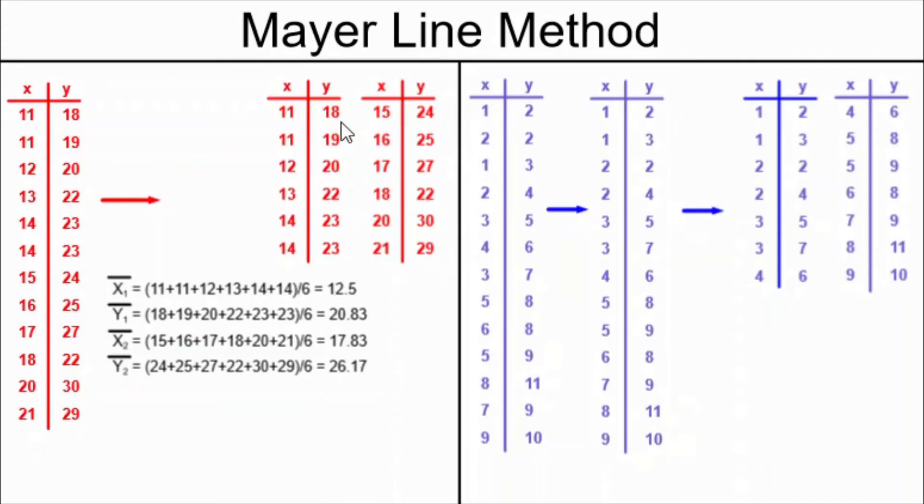Now that we have our tables arranged correctly, we're doing the same process in both the red and blue examples. And we found our various x bars and y bars. What are we going to do with them?